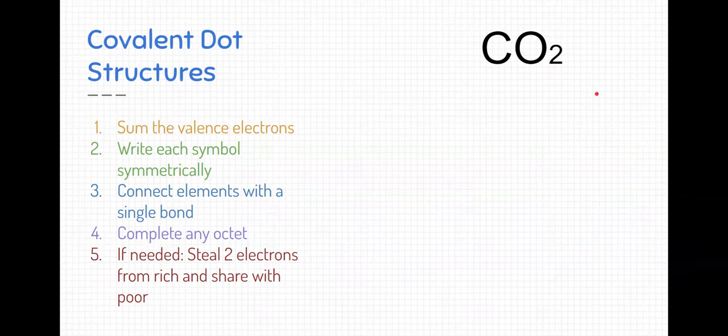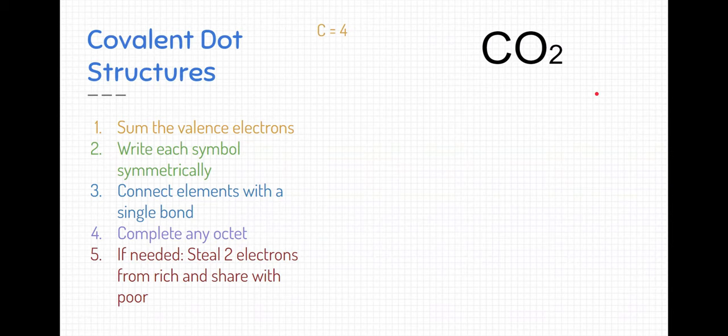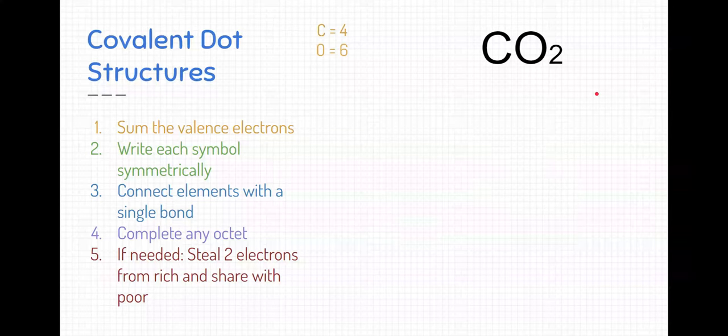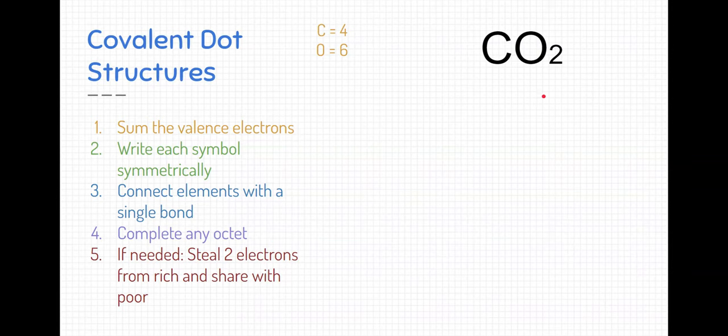So carbon dioxide is made of a carbon and two oxygens. And here's what we need to do first. In order to draw the model of it, we need to sum all the valence electrons. So I know, looking on the periodic table, that carbon has four valence electrons, if we draw that Bohr model or the Lewis or the electron dot structure. Oxygen has six valence electrons on its outermost ring. But remember, we have two oxygens in this compound, so I'm going to need two sets of those. So if I add those all up, I have 16 total valence electrons to work with when I make this compound.